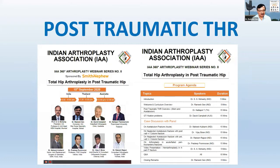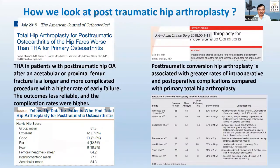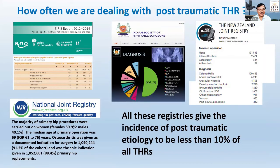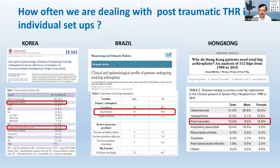Why are we looking at post-traumatic hip arthroplasty? The literature says this problem is more complicated with a higher rate of failure. The Journal of the American Academy states it is associated with a greater rate of intraoperative and postoperative complications. Looking at various registries — Indian, New Zealand, and Swiss — the incidence is around 10%. In individual hospital series from Korea, Brazil, or Hong Kong, it has increased to about 15–20%.